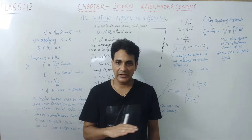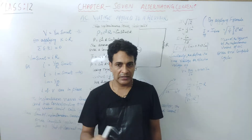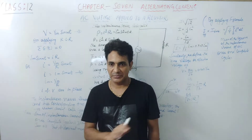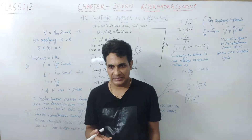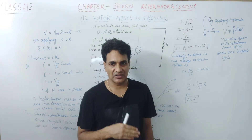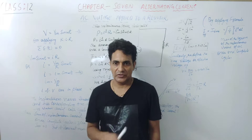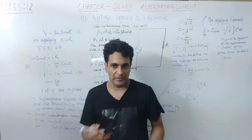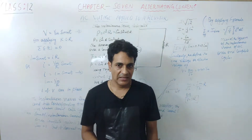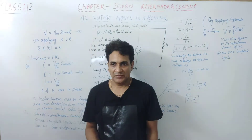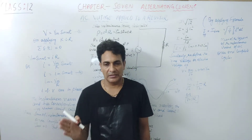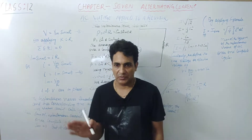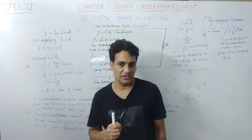Alternating current and alternating voltage change with time. Today, most electrical appliances require AC voltage and AC current. Most electrical energy sold by power companies is transmitted and distributed as alternating current, giving preference to AC voltages over DC voltages. AC voltage can be easily and efficiently transmitted from one point to another by means of step-up and step-down transformers.